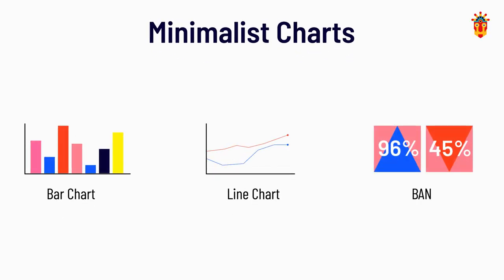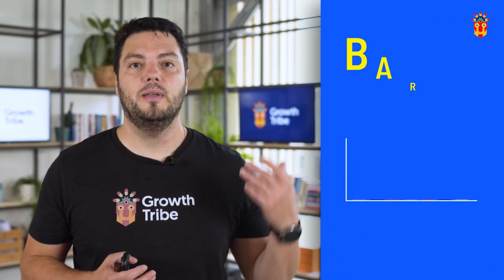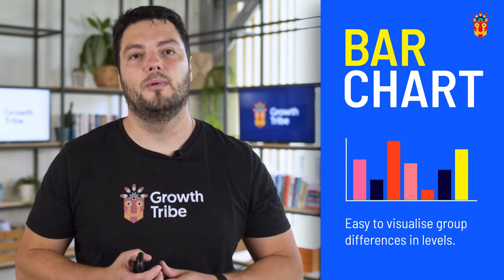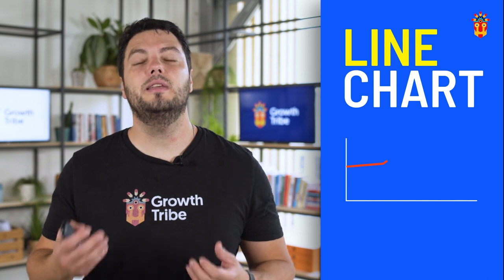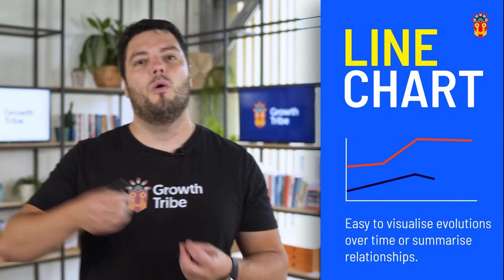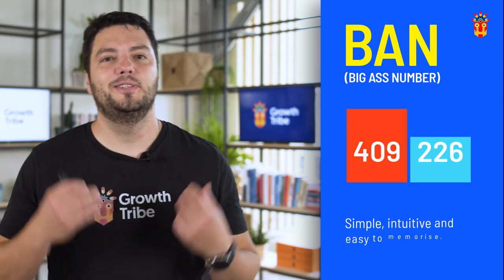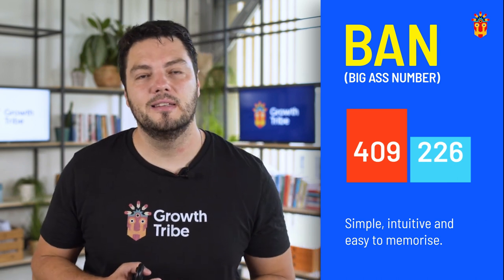Now let's take a look at the possible charts to prototype. Instead of trying to find the most suitable type among hundreds of options, try to experiment with these three efficient types of explanatory visual — we call them the minimalist charts, because they are simple and efficient. The first is the bar chart, very easy to visualize group differences in levels. Then we have the line chart, which makes it easy to visualize evolutions over time or to draw summarized relationships. The third one is the BAN — simple, intuitive and easy to memorize.